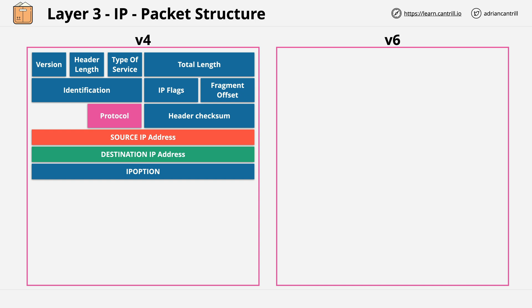This field means that the network stack at the destination, specifically the layer 3 component of that stack, will know which layer 4 protocol to pass the data into.